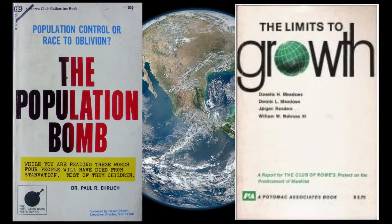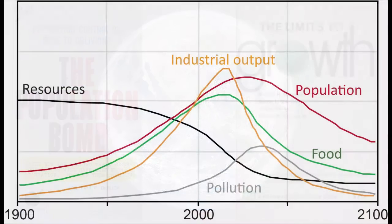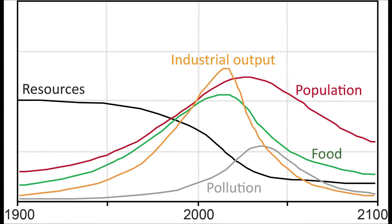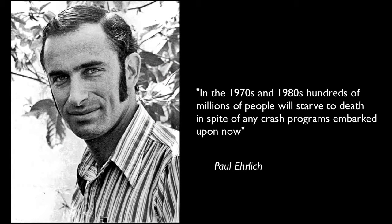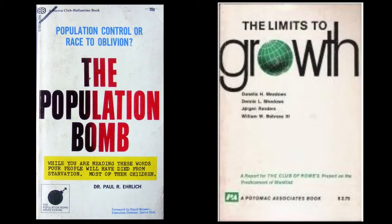The latter was written by a team from the Massachusetts Institute of Technology. Both works predicted disaster for humanity due to rapid population growth outstripping resource supply. Ehrlich made a grim prediction that in the 1970s and 80s, hundreds of millions of people would be starved to death in spite of any crash program embarked upon. Both books urged that radical action was needed to limit overpopulation, rekindling Malthus's theory and the debate over whether he was right or wrong.